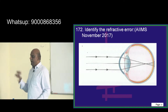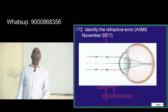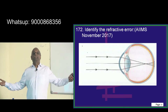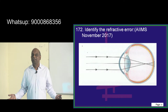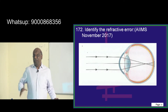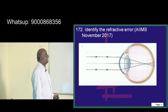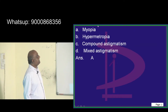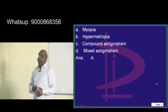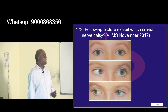A question on refractive error appeared in November 2017. In the case of myopia, the image falls before the retina — that is the classical feature. In hypermetropia, the image forms beyond the retina. That is what you have to basically remember.